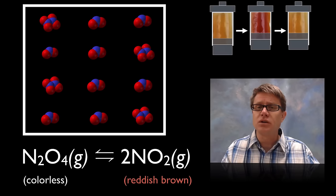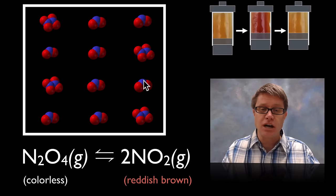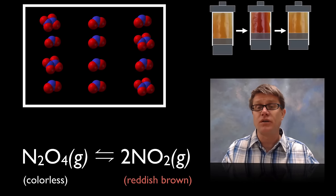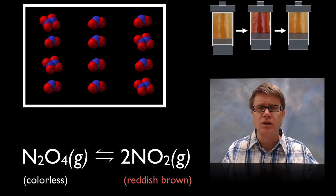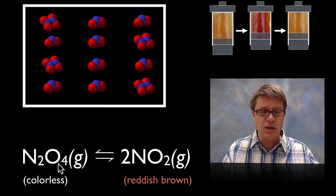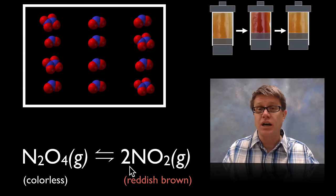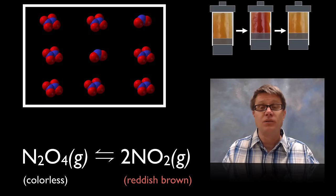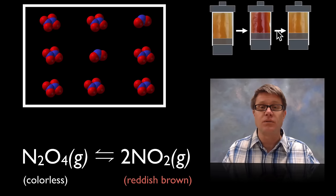Originally we had a mixture of those gases, reddish-brownish because of the nitrogen dioxide molecules present. When I decrease the volume, I'm increasing the pressure of those gases. According to Le Chatelier's principle it's going to move to counteract that increased pressure. Looking at the reaction, we have two moles of nitrogen dioxide on the right side but only one mole on the left. So if we move the reaction from right to left we decrease the number of moles, alleviating some of that pressure. That reaction is switching from the right back to the left.